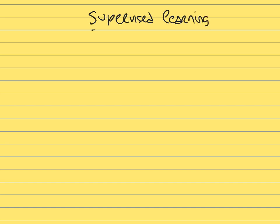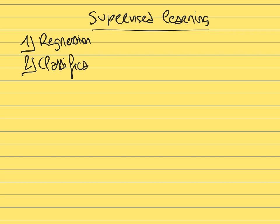Now let's look at examples of these three types of learning. In supervised learning, there are two subcategories: regression problems and classification problems.